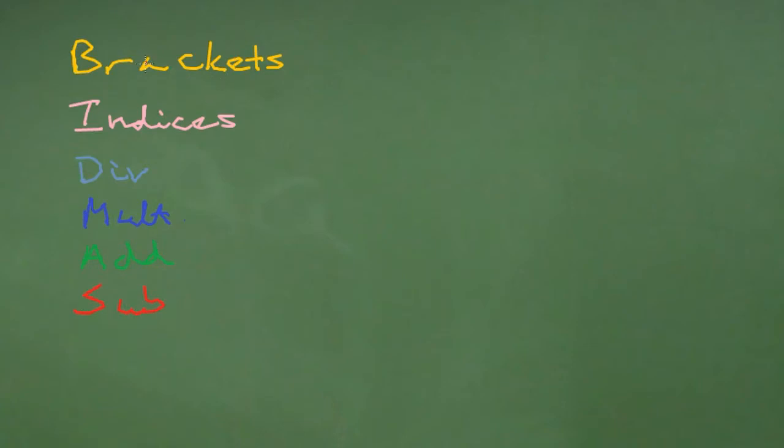Now the way I like to remember this order of operations is by looking at the first letters of each of these, and it spells BIDMAS. You may have heard of BODMAS or PEDMAS, and that's when people use different wording for this. PEDMAS would be for parentheses and exponents, they mean the same thing, but people have different ways of remembering it. I prefer calling them brackets and indices, so BIDMAS is the way I remember it.